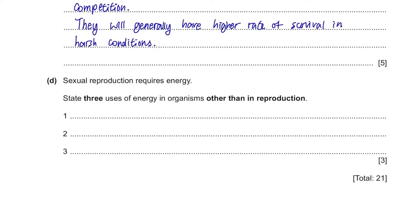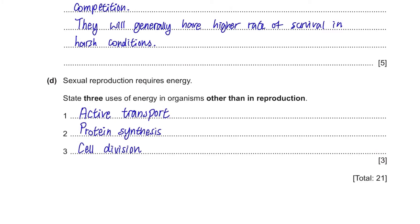Part D. Sexual reproduction requires energy. State four uses of energy in organisms other than in reproduction. Active transport is the popular example, then protein synthesis, cell division, growth, movement, sensitivity, and so on.